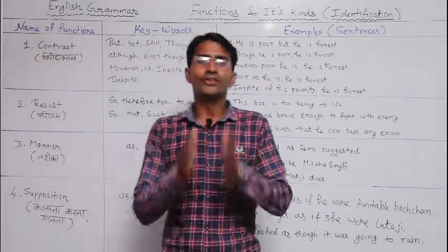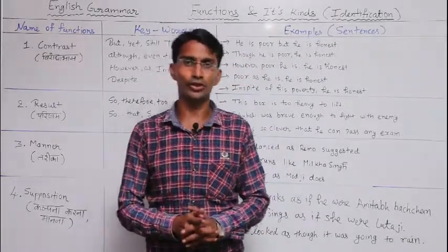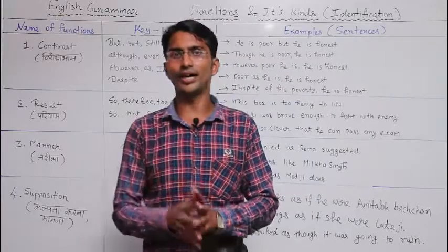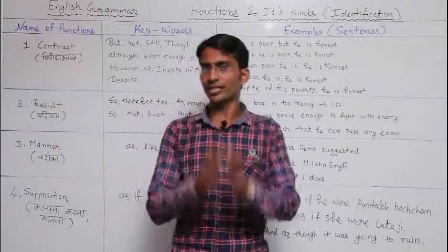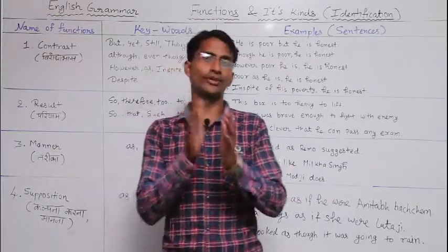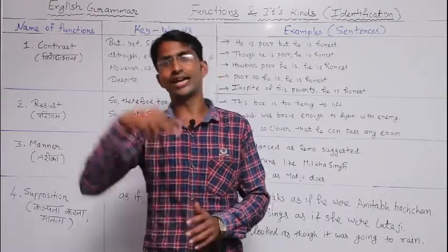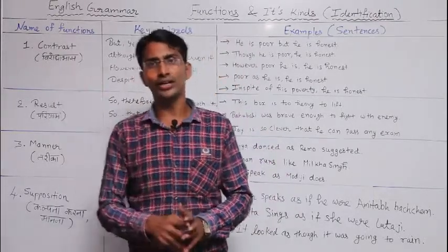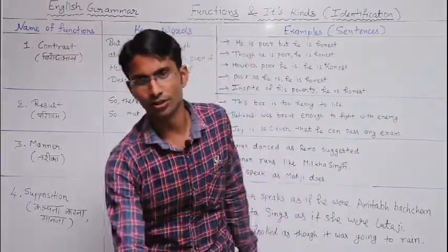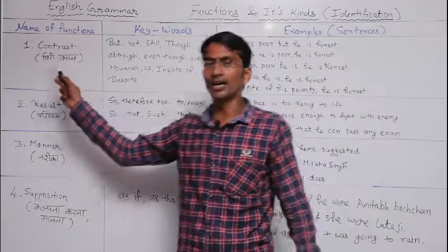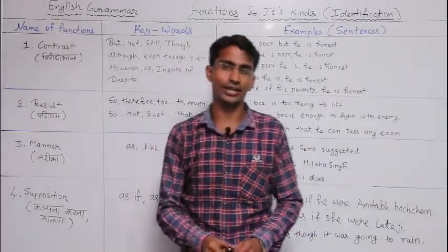In the identification of function, we will learn a total of 14 parts. In this lecture (part one) we will learn 14 functions, and in part two the next 14 functions will come. So let us look at the first function, which is 'contrast'.